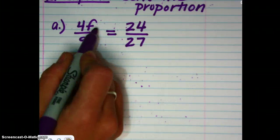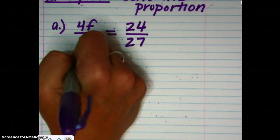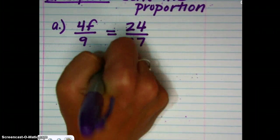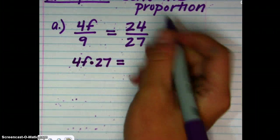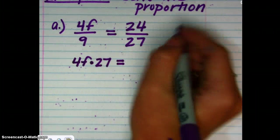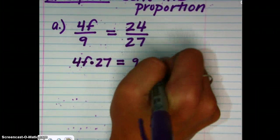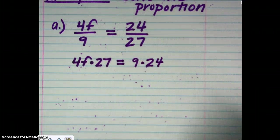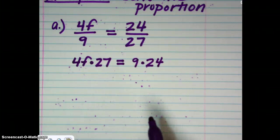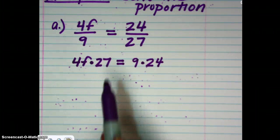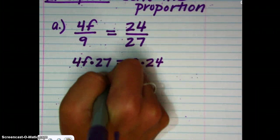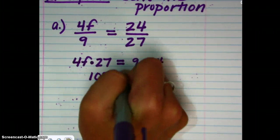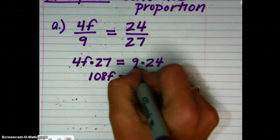So, here we have 4F times 27. That's the cross products there. And that is going to be equivalent to the other cross products, 9 times 24. And so, once you set the cross products equal to one another, you want to simplify and then solve. So, here we have 4F times 27. That's 108F. And that's equal to 9 times 24, which is 216.